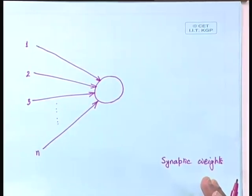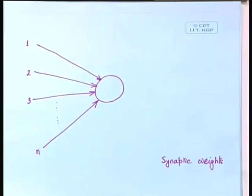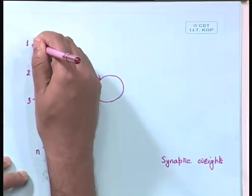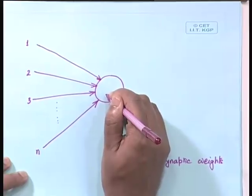There is no binding that synaptic weights must be only positive — they could be positive as well as negative. Because even for biological neurons, the synapses associated with them — which we discussed in the last class — we said they could be either excitatory or inhibitory in nature. We will be having such synaptic weights associated, and those synaptic weights will be defined for the connection between the input and the neuron under consideration.